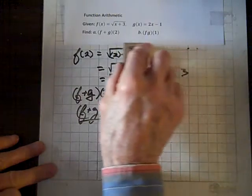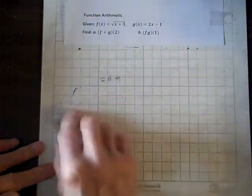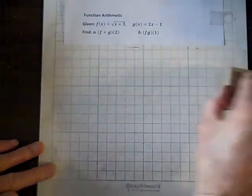But now let's do the next one. This time, we have multiplication, f times g of 1.